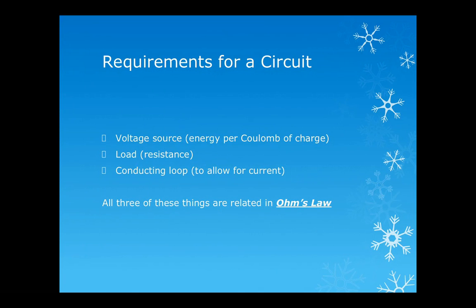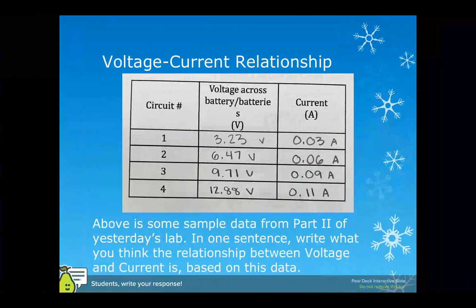Remember that for a circuit to be functional and safe, it needs three things. It needs a voltage source, like a battery or a power outlet. It needs a conducting loop, so wires, to allow charge to flow. It also needs some sort of load. It needs some place for energy to go. That's what we call resistance. That could be a light bulb, a toaster, or a resistor that just turns that energy into heat. And all of these three things relate in Ohm's Law.